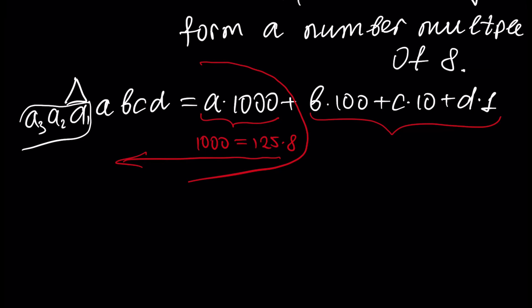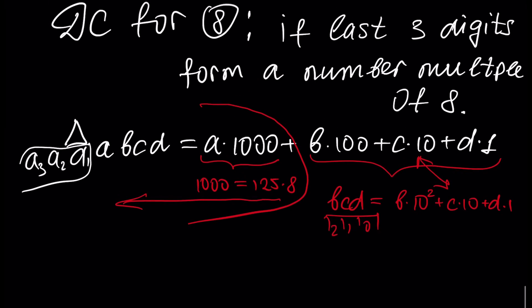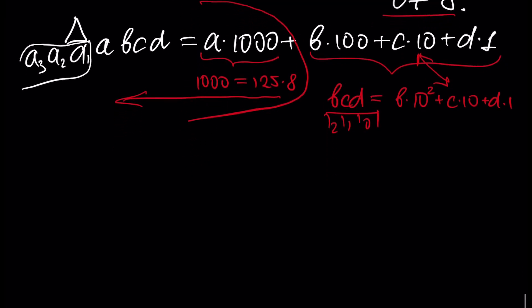This is the decimal representation for number BCD. BCD has a decimal representation: B times 10 squared plus C times 10 plus D times 1, and this is exactly what we see here. That's why if the last three digits of our number form a number that is a multiple of 8, then our number is divisible by 8.